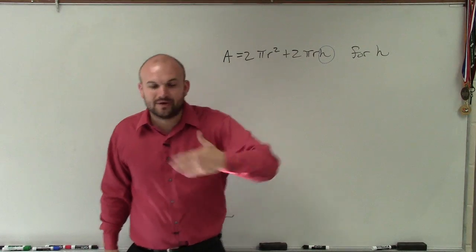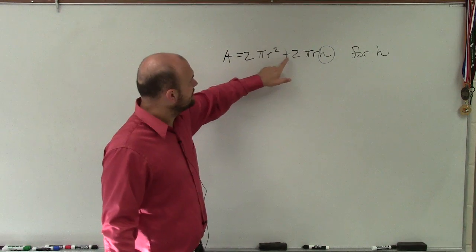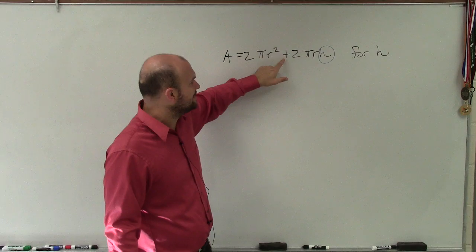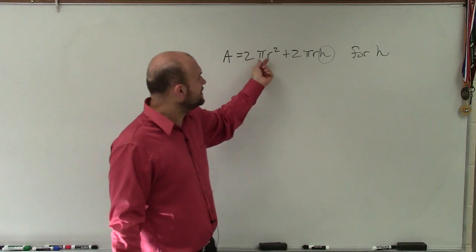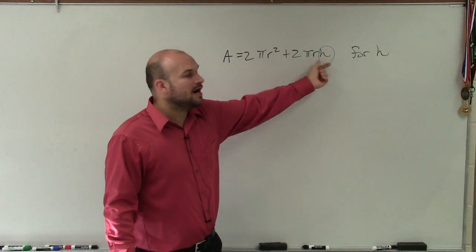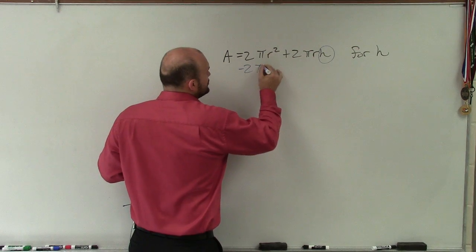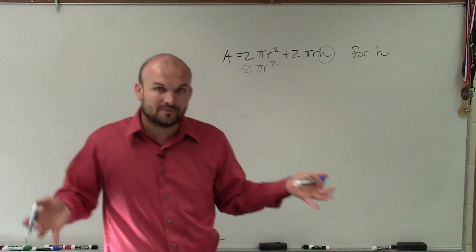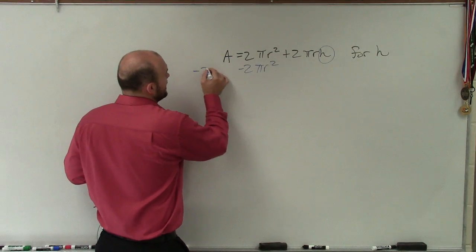Always want to undo what is adding or subtracting to your variable first. Well, you can see even though, yes, there's the addition sign in front of this, this is positive. So we're adding 2πr². So to get rid of the 2πr² on the side of the h, I need to subtract it. So I'll just subtract 2πr². I need to eliminate the whole term, right? You can't just subtract the 2. You've got to get the 2πr². You need to do that on both sides.